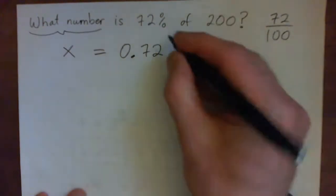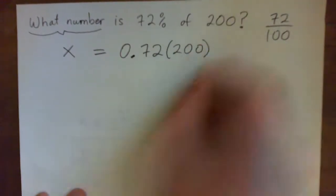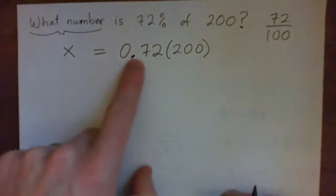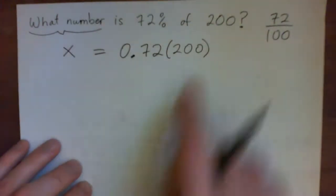Of means multiply. Multiply by what? Of multiplied by 200, right? So X equals 0.72 times 200. So to get the answer, we just calculate this, right?